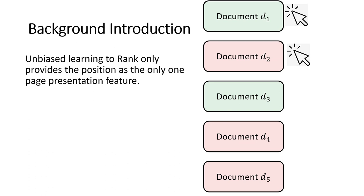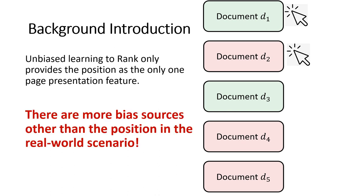Current Unbiased Learning to Rank methods only view position as the only page presentation feature and the only source of bias. But this is not aligned with real world scenarios, which have more presentation features.